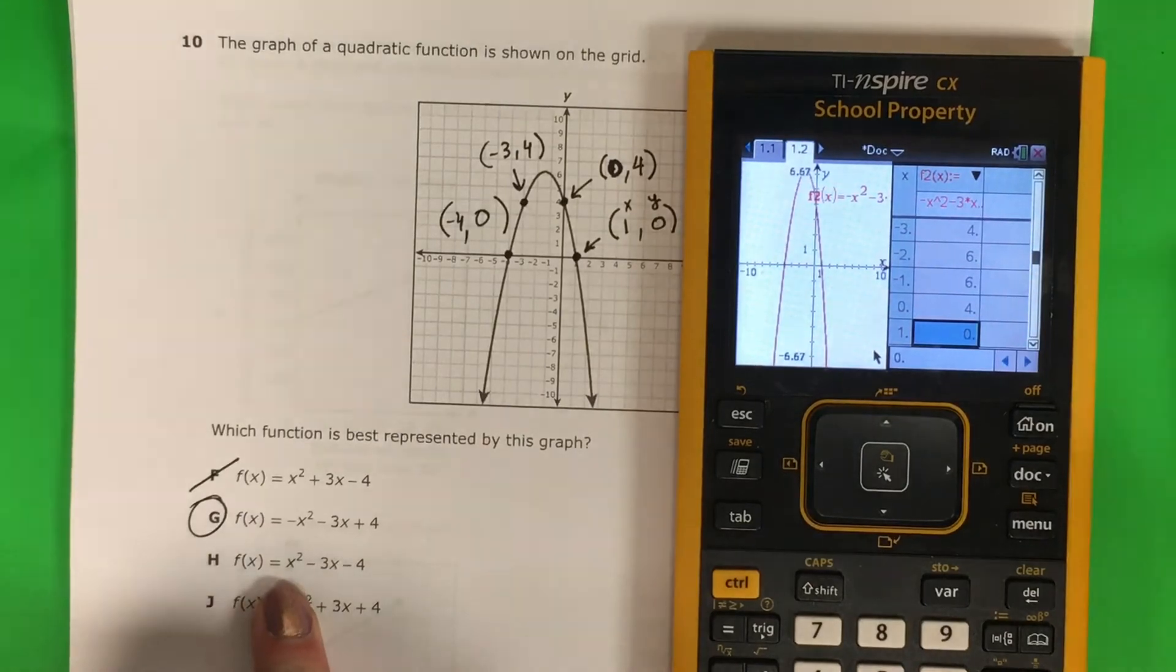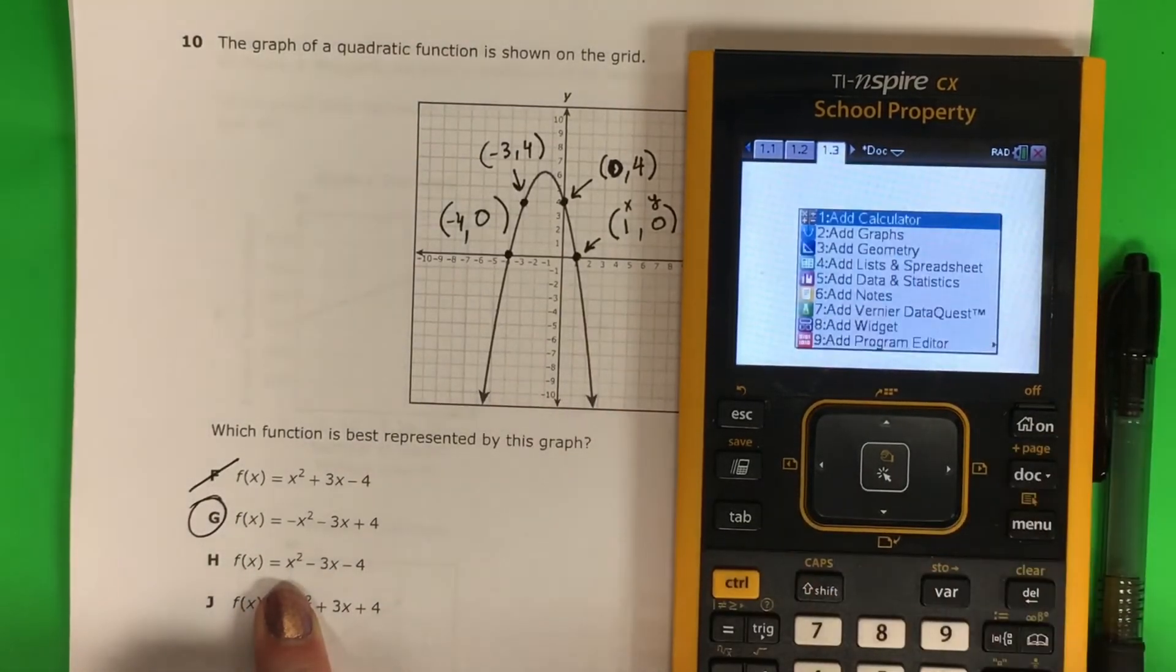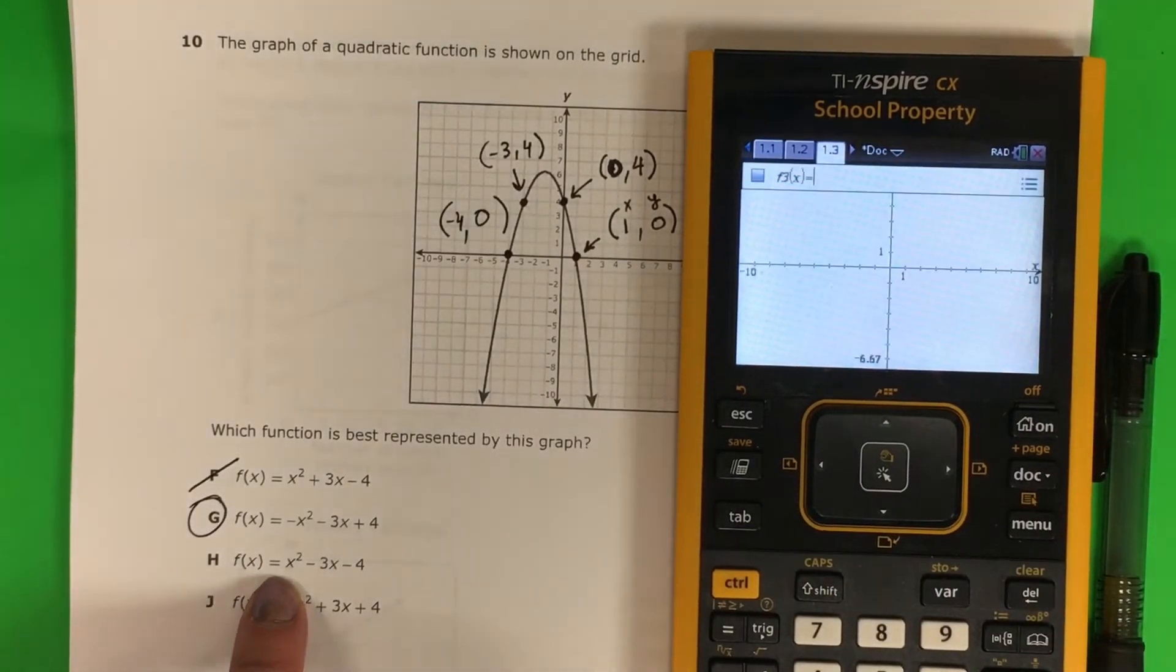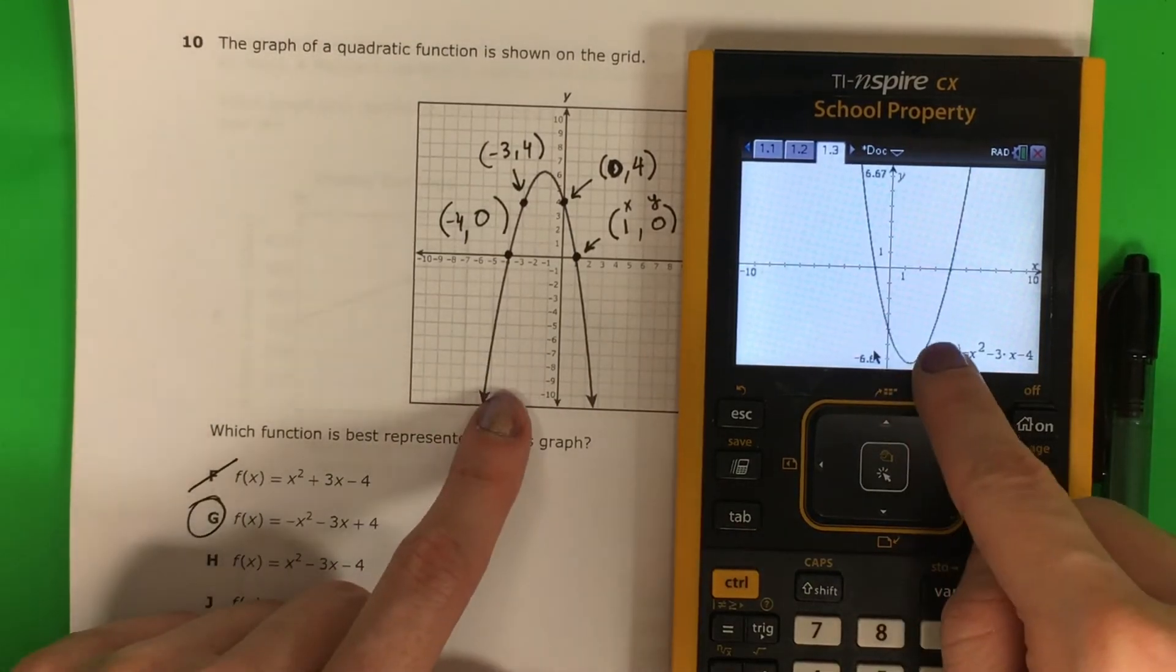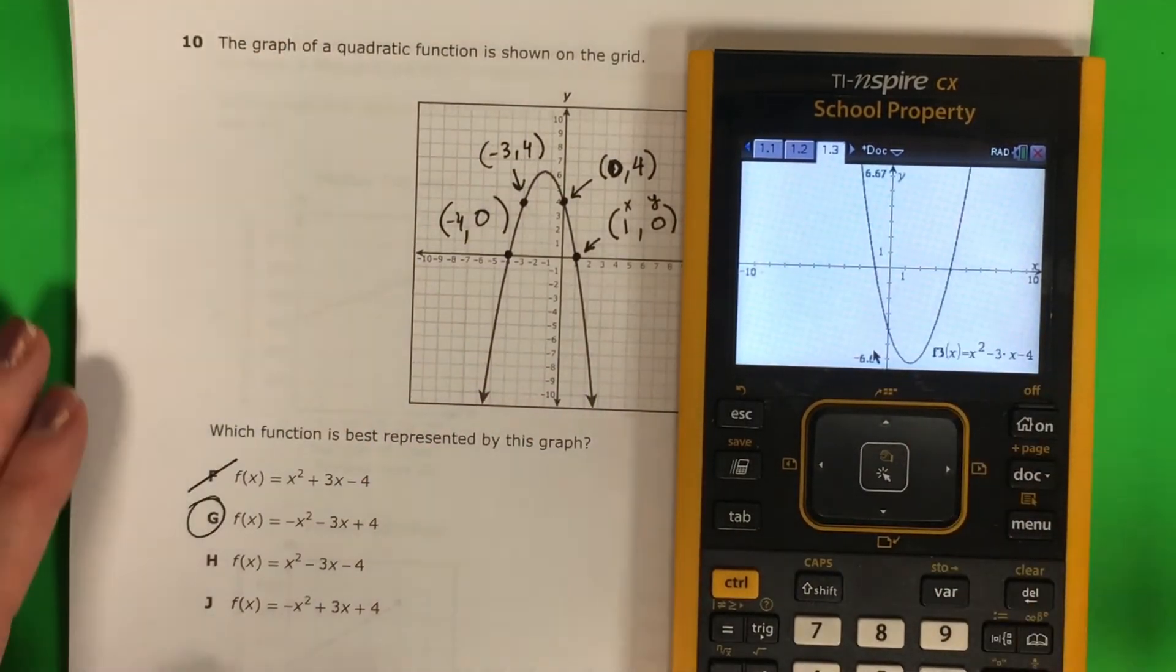Let's try H. Ctrl, doc, 2. x squared minus 3x minus 4, enter. Oh, does that look the same? No, that's very different. So it's not H.